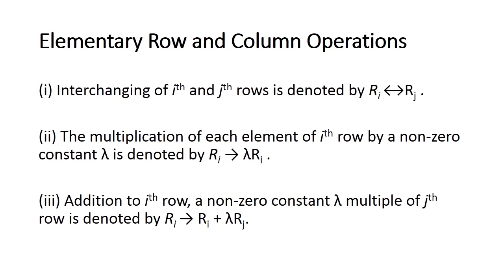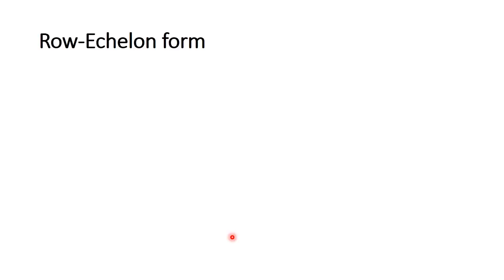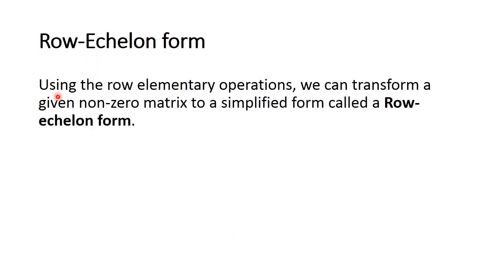We can use the column operations also, but for that we use the notation Ci and Cj. Now let us learn row echelon form. Using elementary row operations we can transform a given non-zero matrix to a simplified form called a row echelon form.